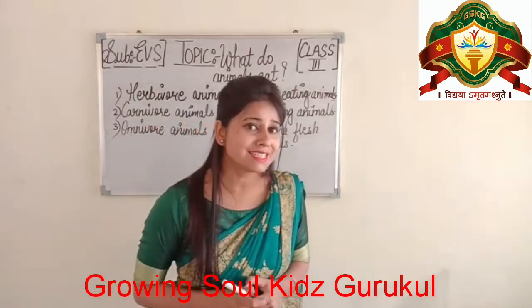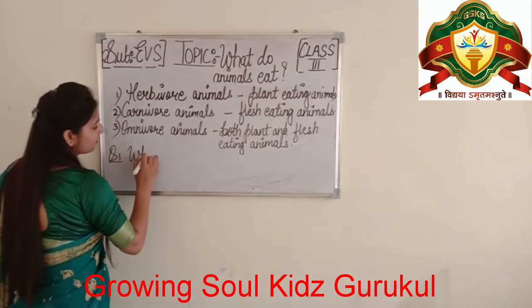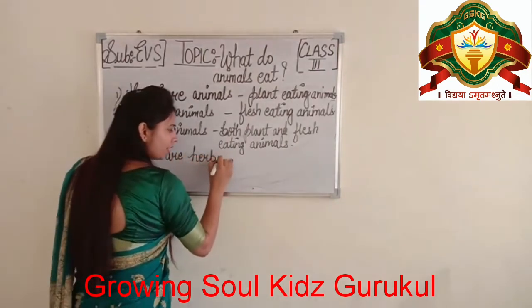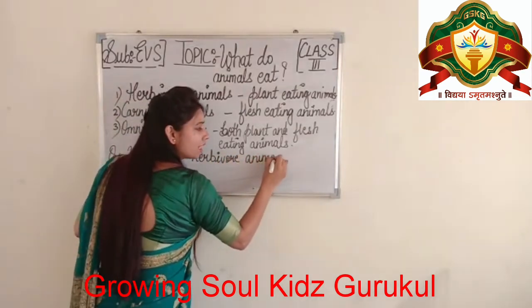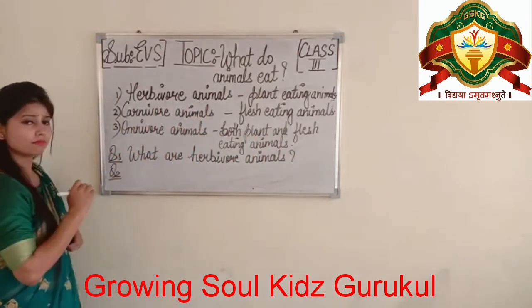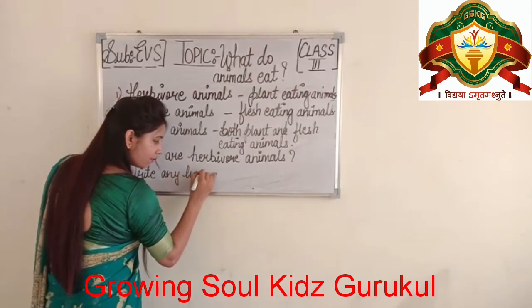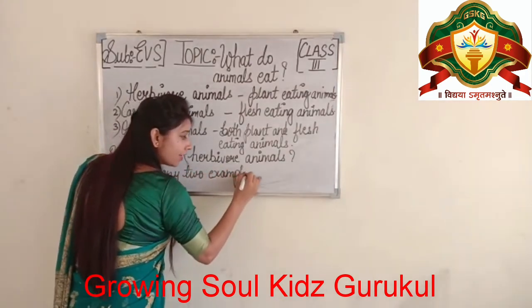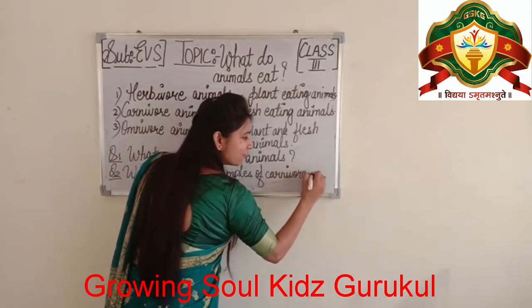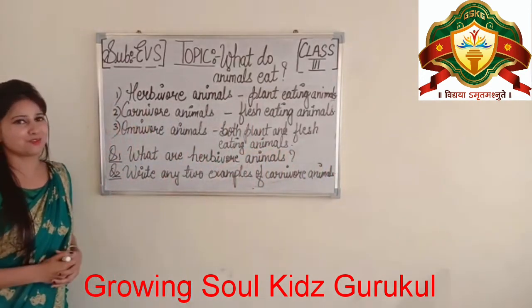Write down the homework. Your first question is: What are herbivore animals? And the next question: Write any two examples of carnivore animals.